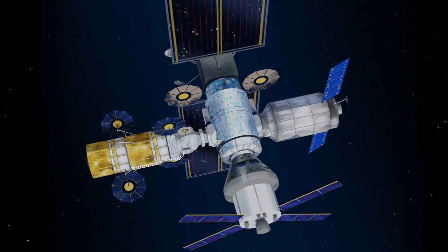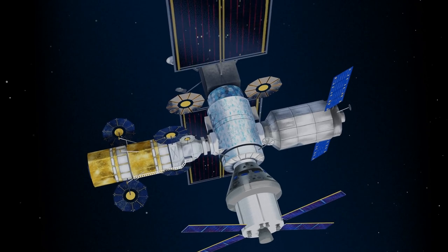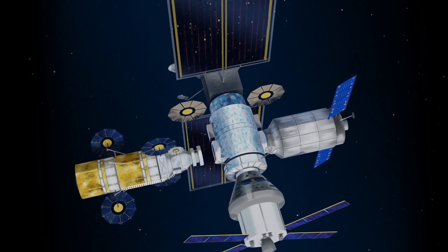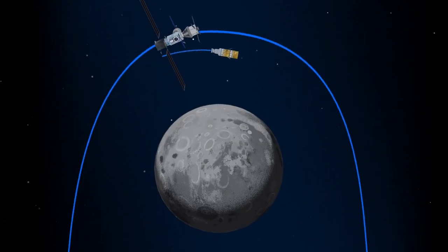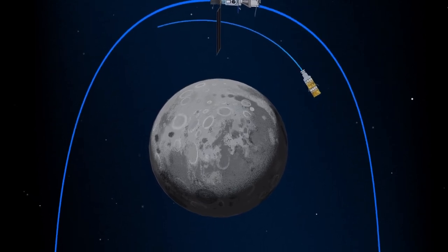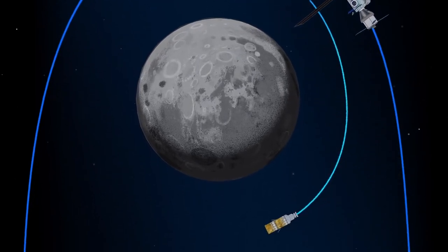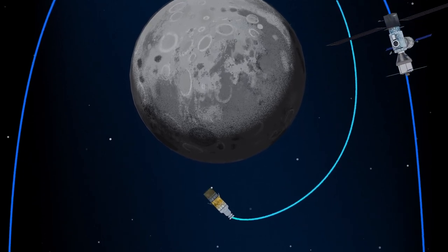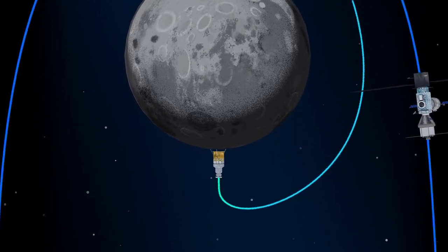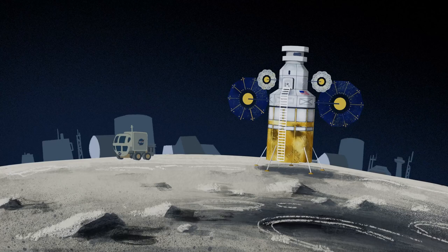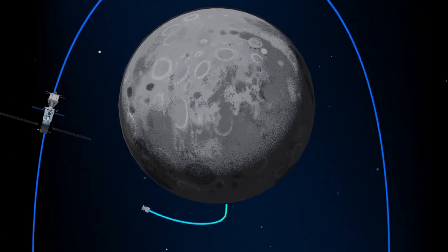Once on board, pre-selected crew members transfer to the lunar lander, while those assigned to Gateway remain on station. The lunar lander system itself is built for three unique steps: descending from the halo orbit of Gateway down to a low lunar orbit, descending from low lunar orbit to the surface, and once the lunar mission is complete, launching from the surface of the Moon and ascending all the way back to the orbiting Gateway.